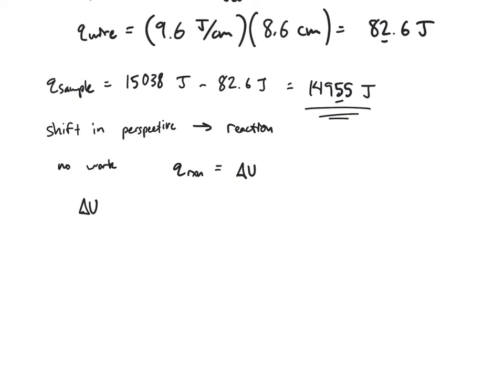This delta U of the reaction is going to be equal to the negative heat from the sample that was absorbed by the calorimeter. So my delta U is negative 14,955 joules. This number up here represented how much heat went into the calorimeter, but this number represents how much heat was lost by the reaction itself. That's why it's negative.